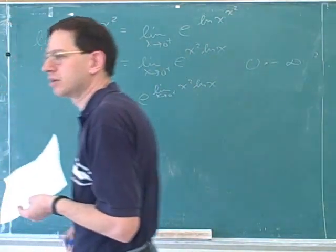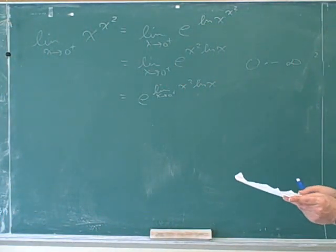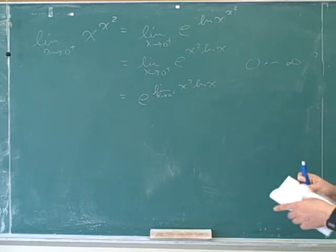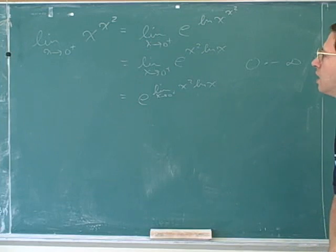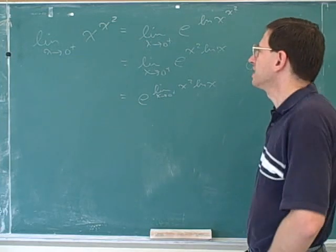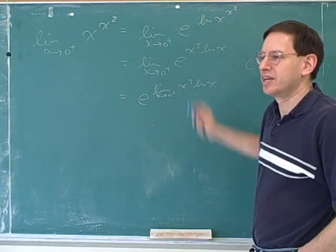I have a question. Does it work also to take the natural log of both sides? Like, let's set x to the x squared, if it's y, I would take the natural log. Yeah, that's really the same thing as I'm doing. Okay. That's right.